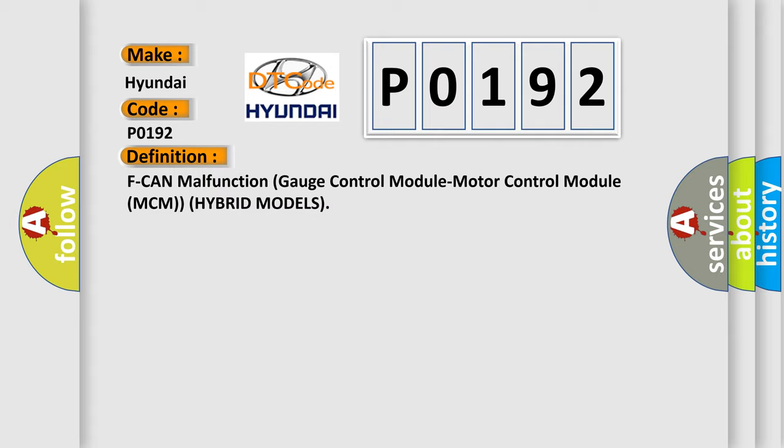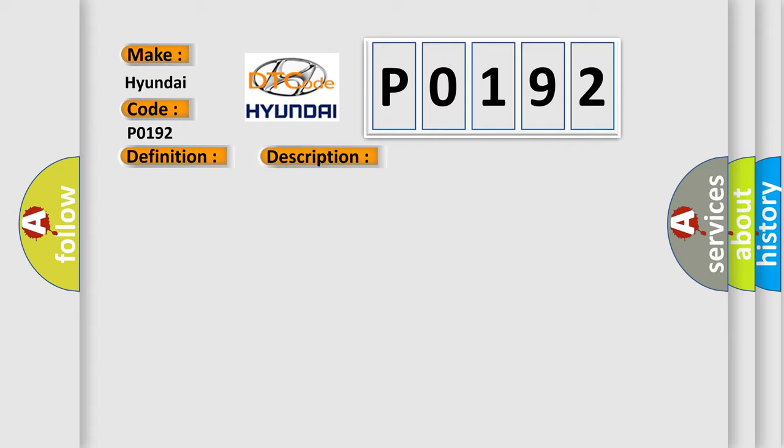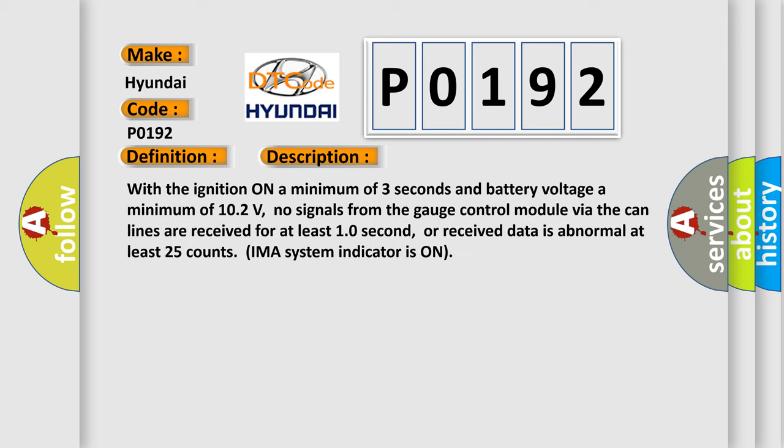And now this is a short description of this DTC code. With the ignition on a minimum of 3 seconds and battery voltage a minimum of 10.2 volts, no signals from the gauge control module via the CAN lines are received for at least 1.0 second, or received data is abnormal at least 25 counts.